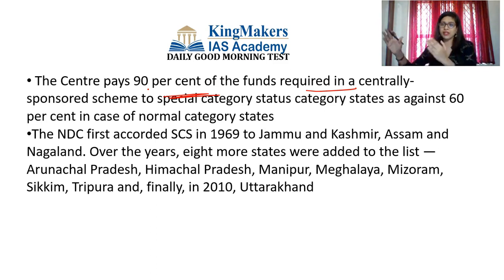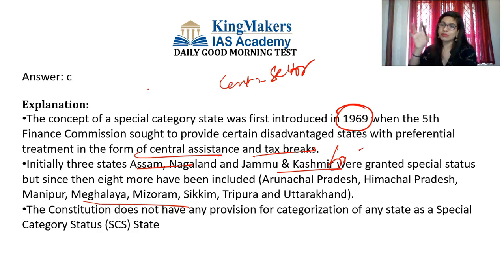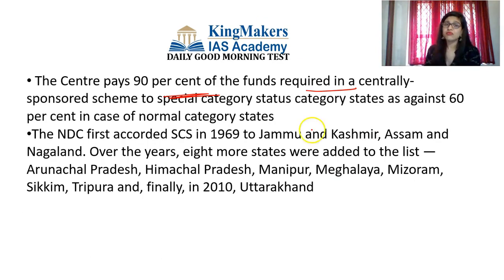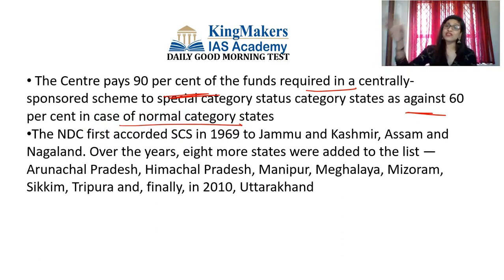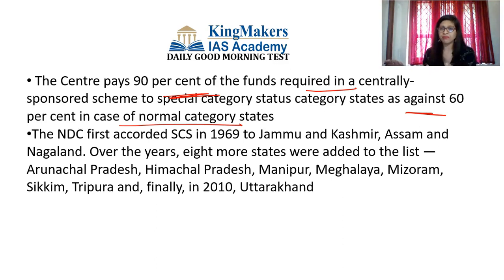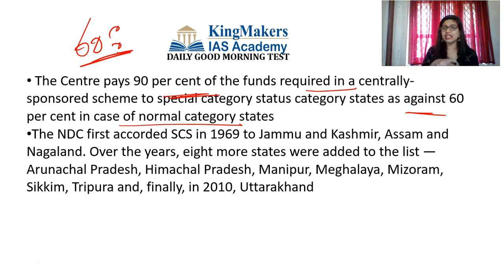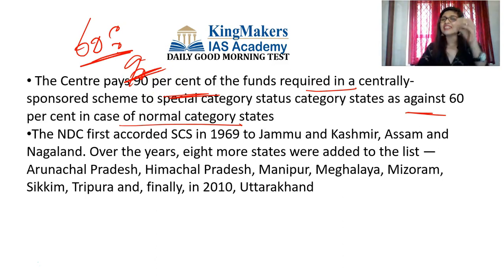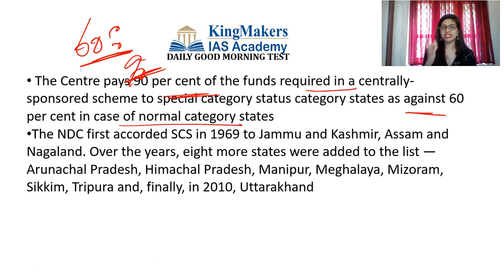These Representative Concentration Pathways are consistent with a wide range of possible changes in future anthropogenic — that is, human — greenhouse gas emissions. The main aim is to represent atmospheric concentrations. Greenhouse gas emissions have caused significant issues leading to global warming and climate change. The RCP 8.5 scenario refers to a continued rise in greenhouse gas emissions throughout the 21st century. The RCP 4.5 scenario refers to emissions that will peak around 2040 and then decline — that is the major difference between RCP 8.5 and RCP 4.5.